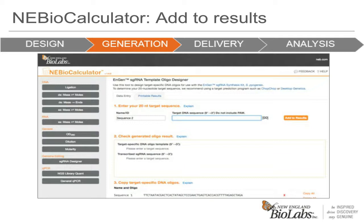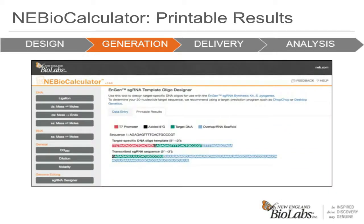You can continue to add sequences and build a list of oligos. When you are finished designing the oligos, you can click on the printable results tab, which will bring you to a printable window with a record of the oligos you ordered as well as the exact sequences of the sgRNAs that will be produced with your kit.